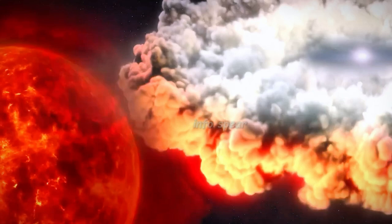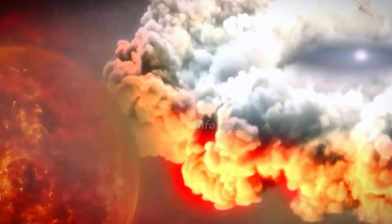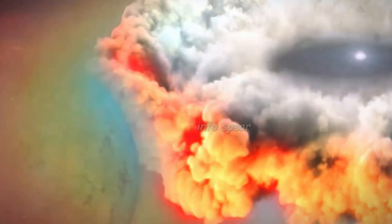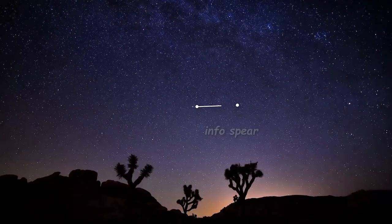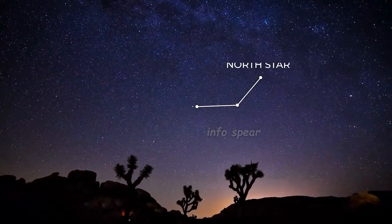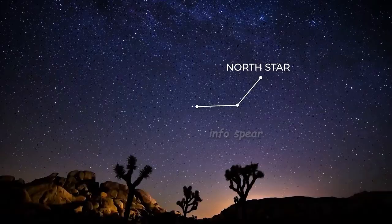Here's the best part. You can see this incredible event without any fancy equipment. Once TCRB goes nova, it will light up the night sky, and all you need are your eyes. To find it, look for the Corona Borealis constellation, which forms a delicate U-shape between Hercules and Bootes. The best time to catch this constellation is right after sunset during the summer months. So mark your calendars, grab a blanket, and get ready for a celestial show you'll never forget.